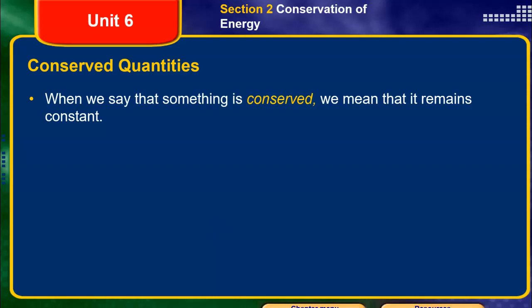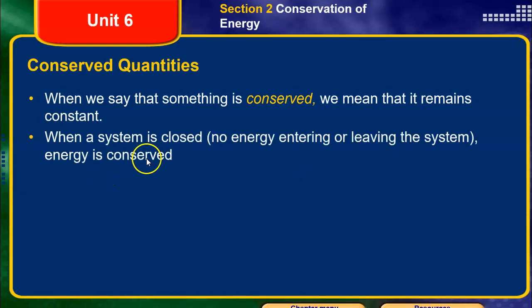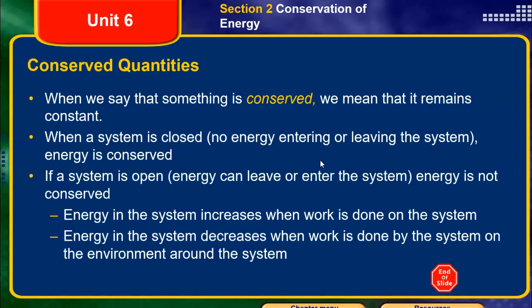When we say something is conserved, we mean that the total amount of it remains constant. When a system is closed — meaning no energy can enter or leave it — the energy is conserved. But if a system is open, so energy can come in and out, energy is not conserved because the total amount of energy doesn't stay the same.